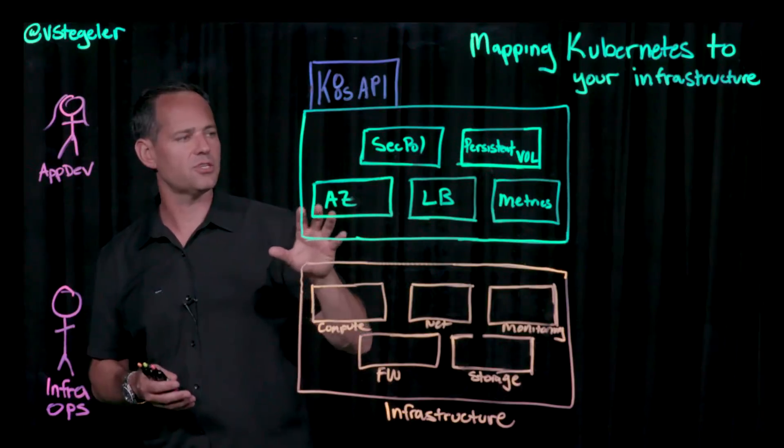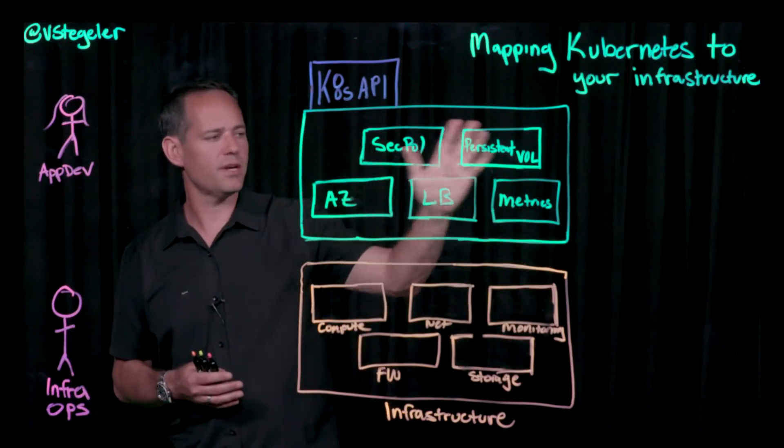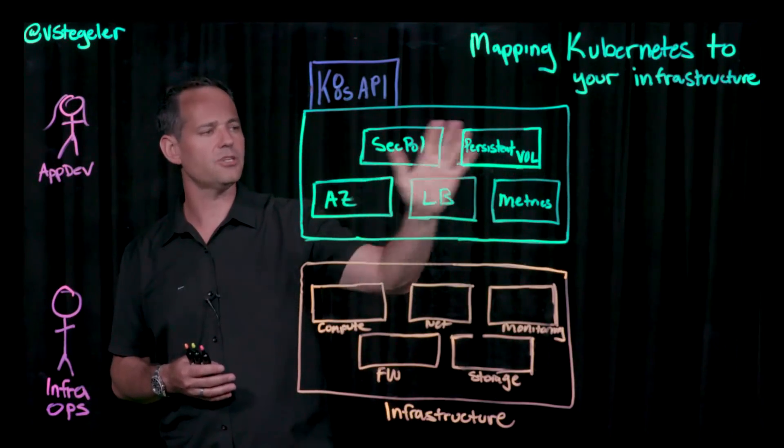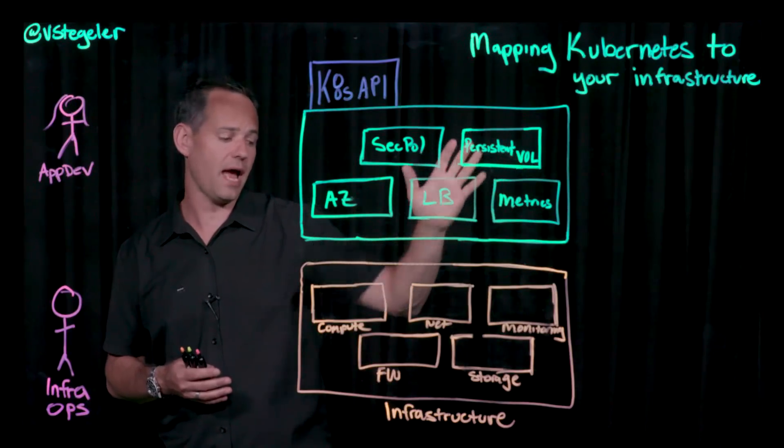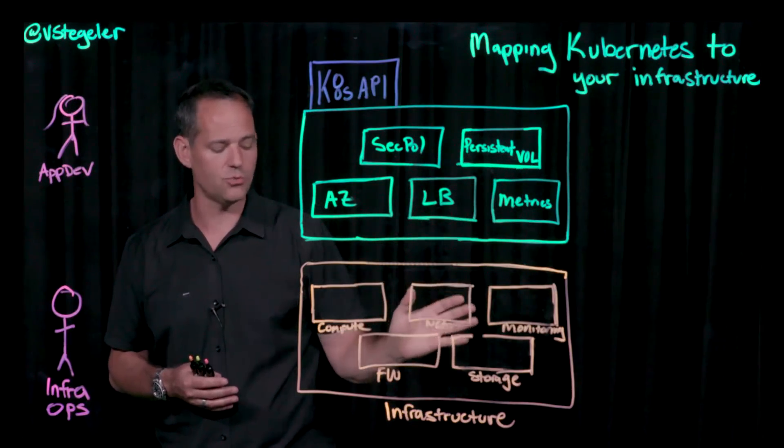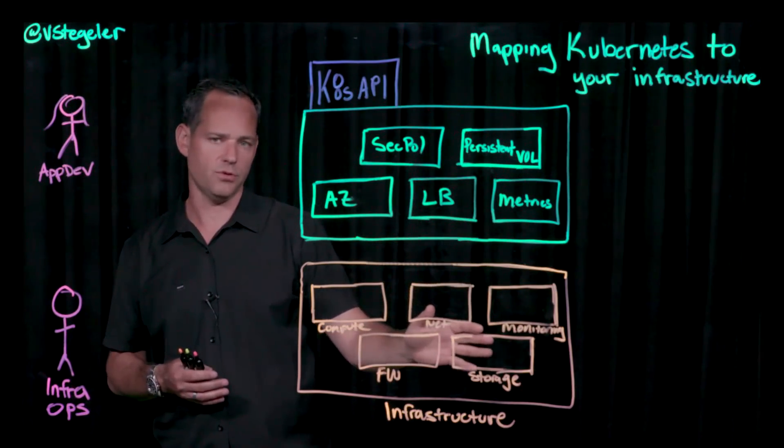What I want to talk about in this session is how do I take those primitives that exist and the definition of what I want to do, and how do I actually do that? How do I do that on a given infrastructure?